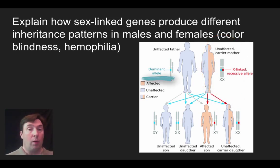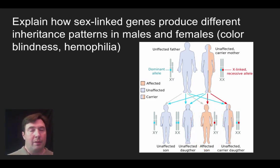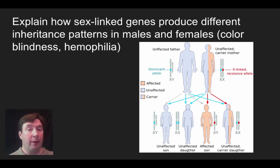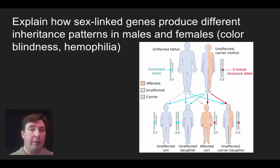If a mom is heterozygous but unaffected — a carrier — and dad has the dominant allele, one of the sons who gets Y from dad and the recessive X from mom will show the X-linked trait. Red-green colorblindness is a classic example — it occurs about 10 times more commonly in males than females in the US. Hemophilia is another example, much more dangerous, and before factor eight treatment it was deadly. It was almost unheard of in females because you would need to get two copies — one from an affected dad and one from a carrier mom — to have a hemophiliac daughter.